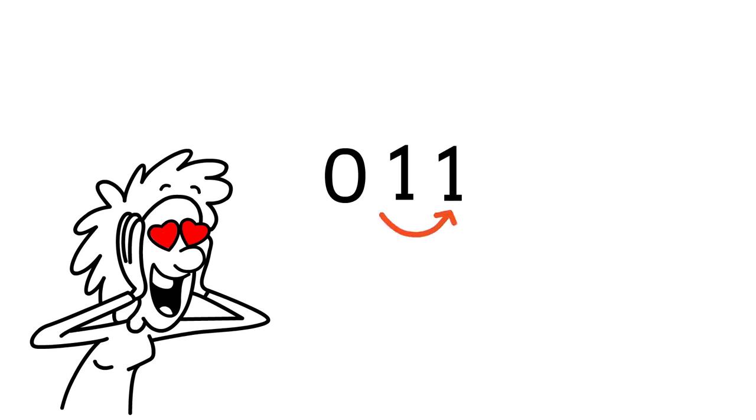From there the numbers cascade like falling dominoes. Zero plus one equals one. Following the sequence, one plus one equals two, two plus one equals three, three plus two equals five. And so the sequence dances on.